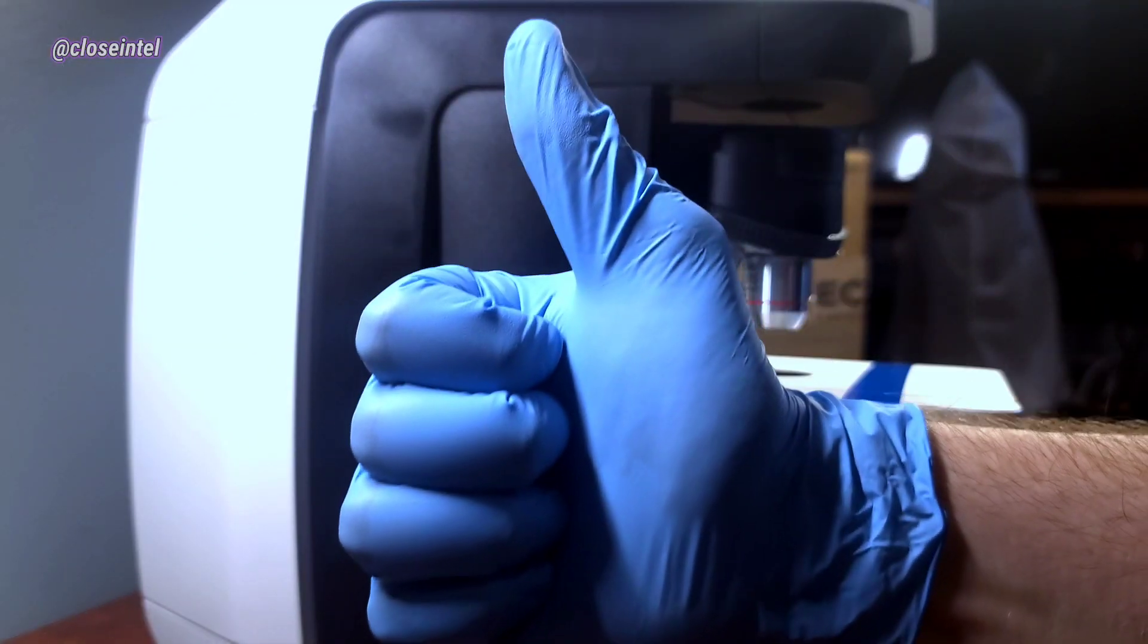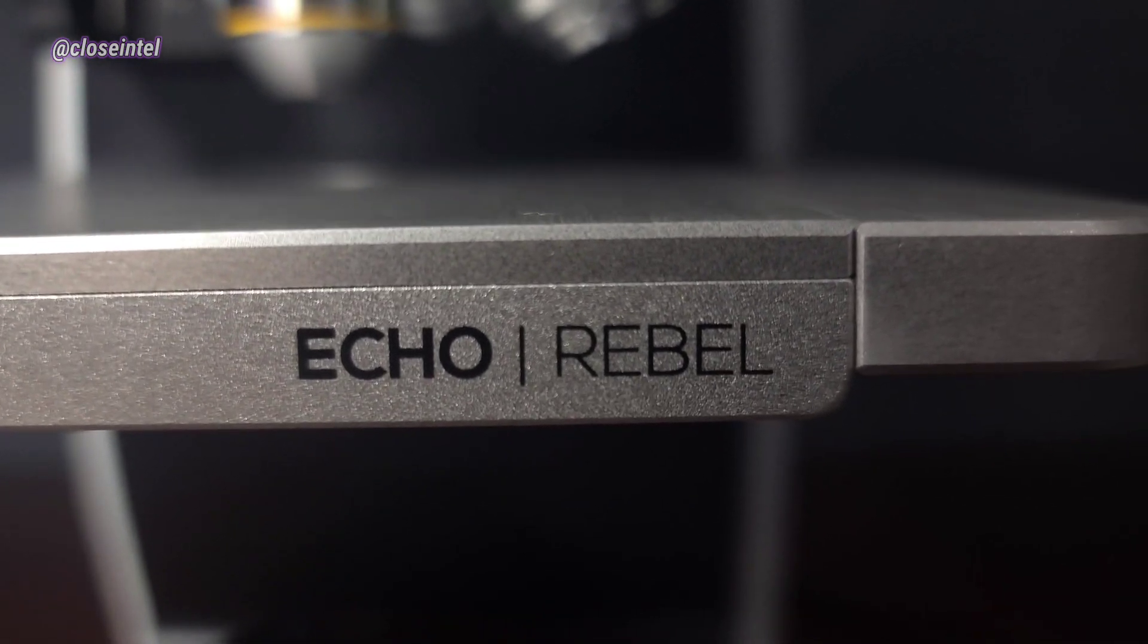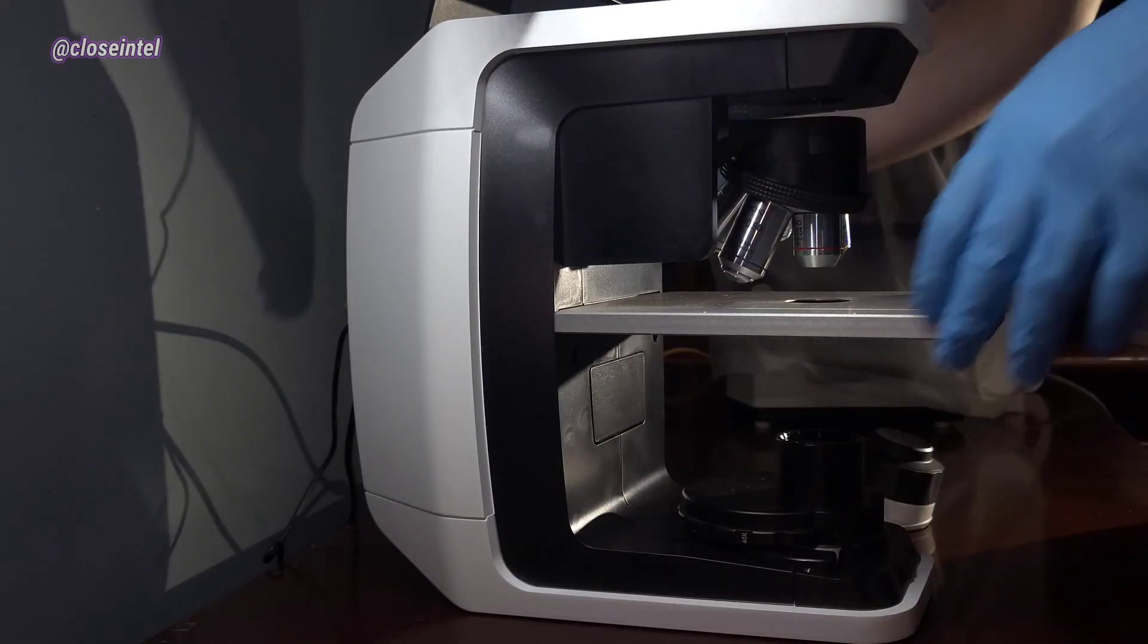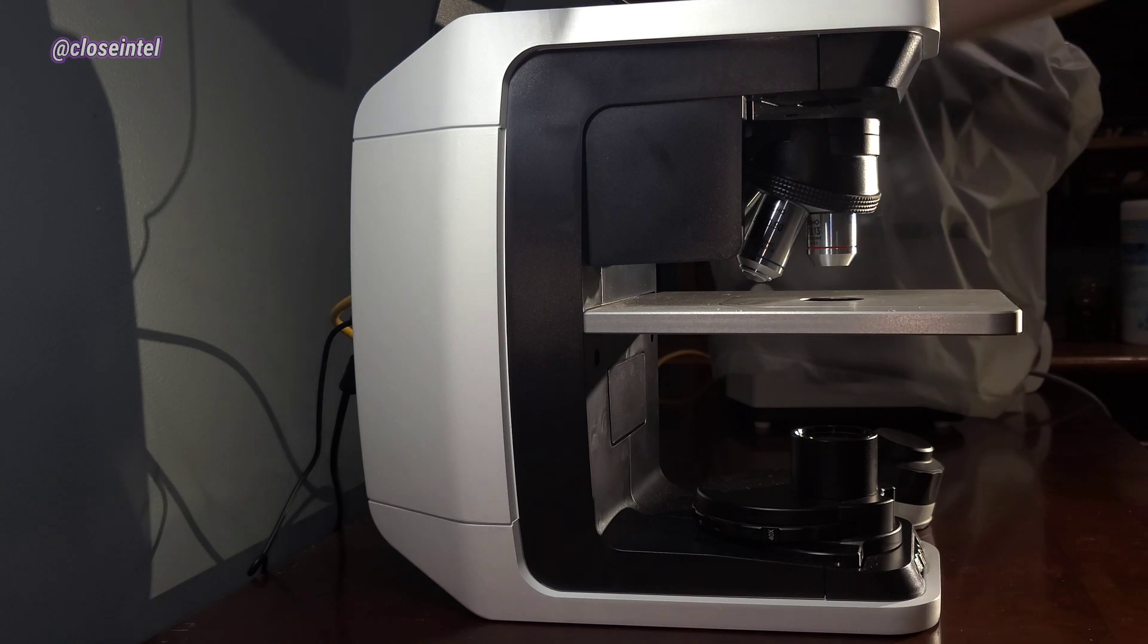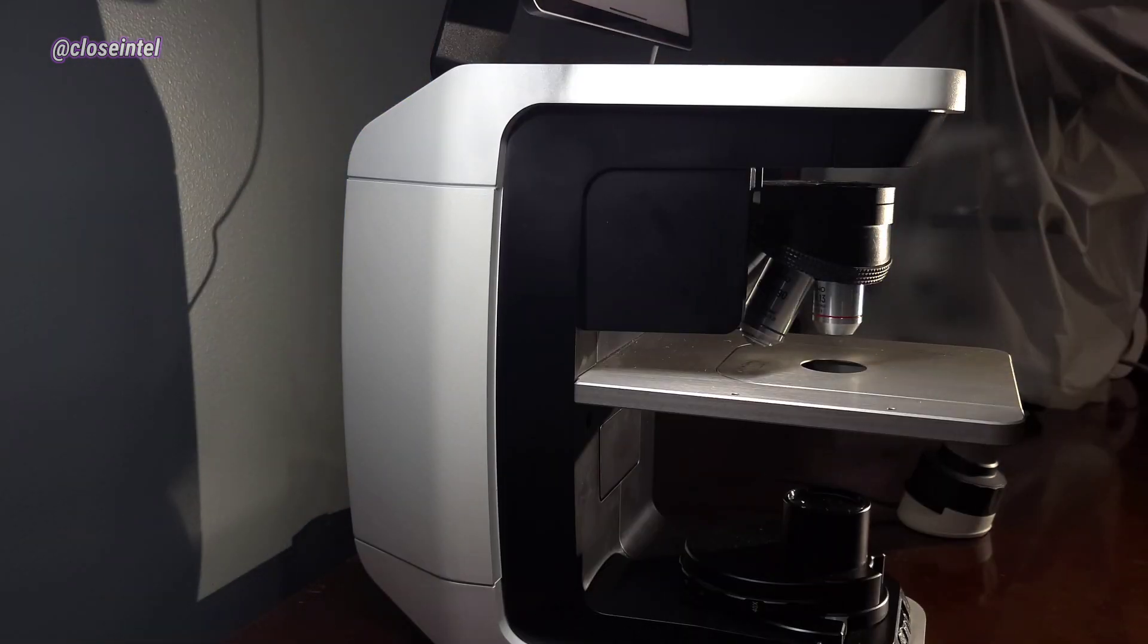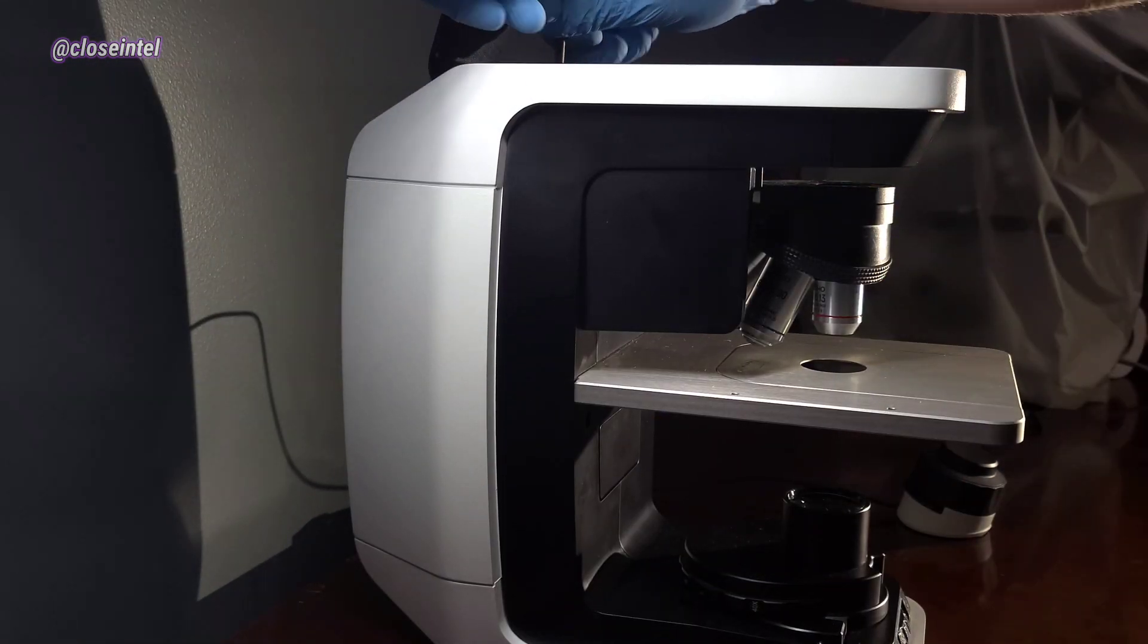Now the microscope will be ready to use and I'm going to show you some of the features as well. This is the Echo Rebel. The first thing that I want to show you is that this is technically two microscopes. It's the world's first and only hybrid microscope that can switch between upright and inverted.